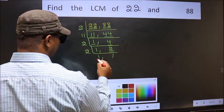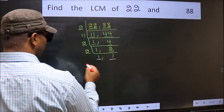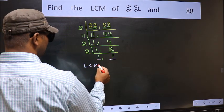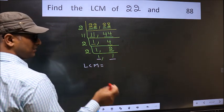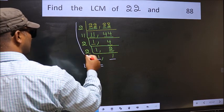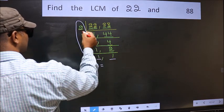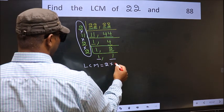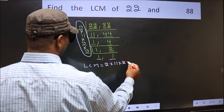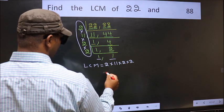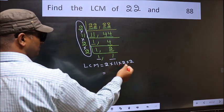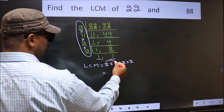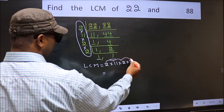So we got 1 in both the places. So our LCM is the product of these numbers. That is 2 into 11 into 2 into 2. So let us multiply these numbers: 2 into 11 is 22, 22 into 2 is 44, 44 into 2 is 88. 88 is our LCM.